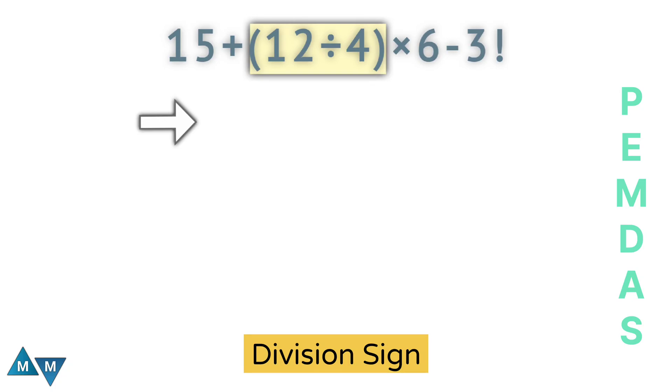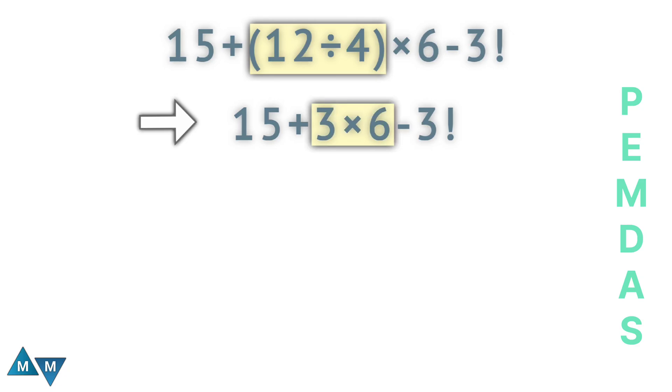Now we have 15 plus 3 times 6 minus 3 factorial. Following the PEMDAS rule, our next step is to solve the multiplication. So 3 times 6 equals 18.